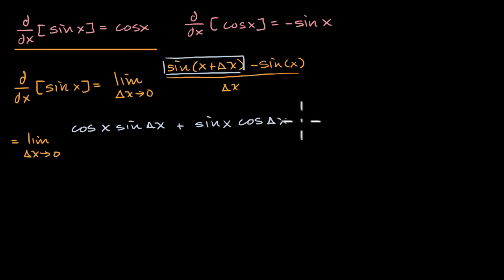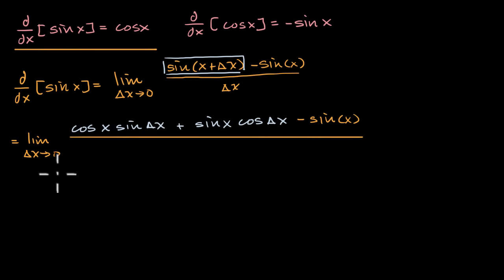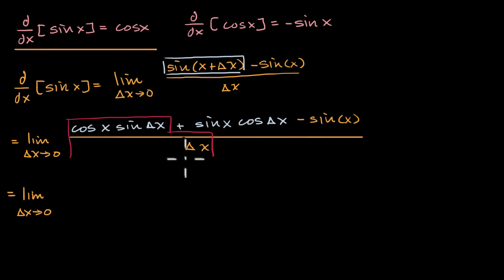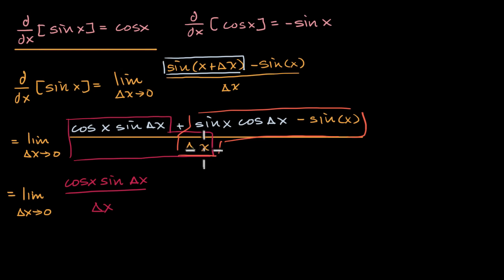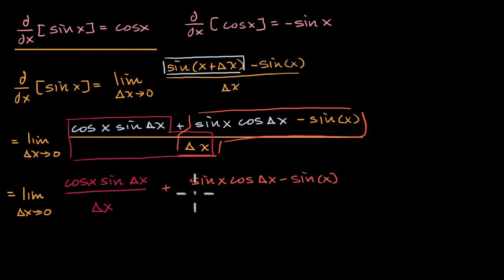And then we're going to subtract sine of x, all of that over delta x. So this can be rewritten as being equal to the limit as delta x approaches zero. So that would be cosine of x times sine of delta x minus sine of x, all of that over delta x, plus sine of x times cosine of delta x minus sine of x, all of that over delta x. All I'm doing is breaking up the sum divided by delta x.